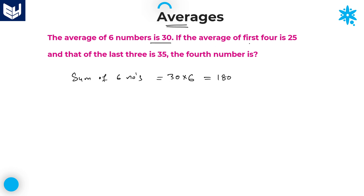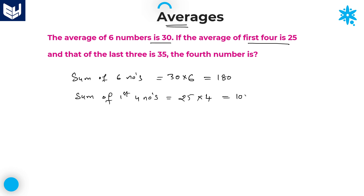If the average of the first 4 numbers is 25, then the sum of the first 4 numbers is equal to average into number of values, that is 25 into 4, which is equal to 100.